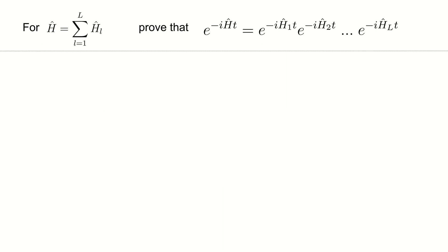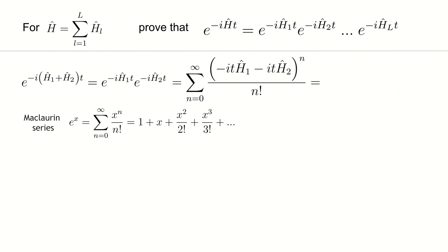Without loss of generality, we are going to prove this statement for the Hamiltonian which consists of two local terms, h1 and h2. First, we use the formula for the Maclaurin series of the exponential function and get the following.